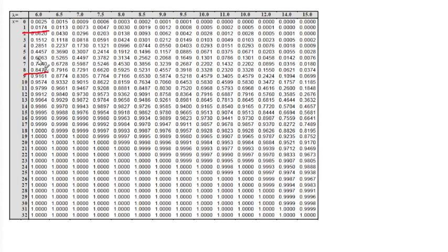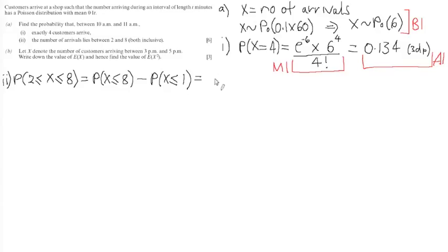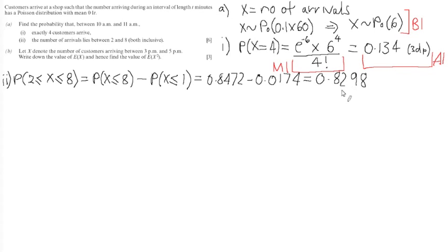So P(X ≤ 8) is 0.8472, take away P(X ≤ 1) which is 0.0174. When we perform this calculation, we get an answer of 0.8298 to 4 decimal places. For the marks, we get statement marks for the two correct table readings, one for each, and then a standalone statement mark for the correct final answer.